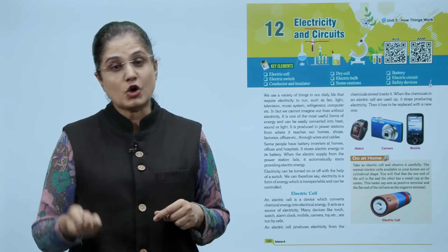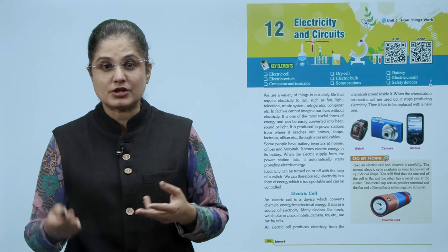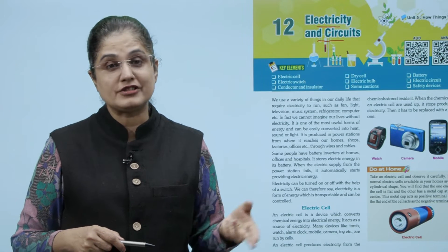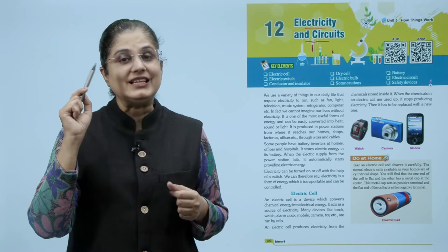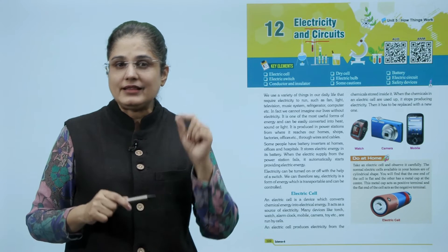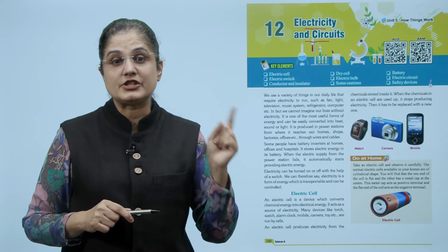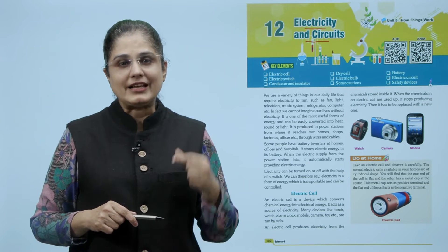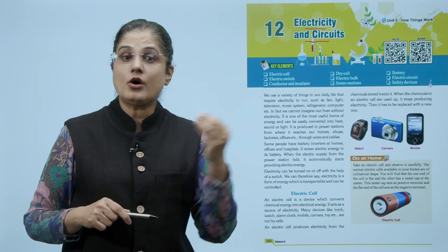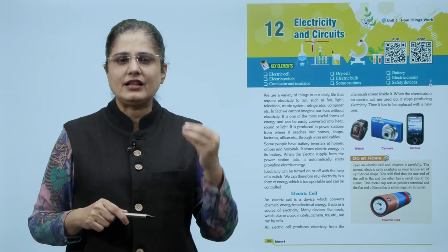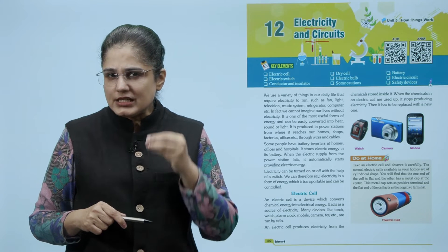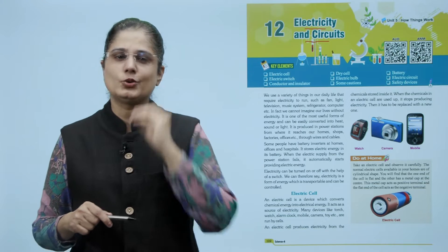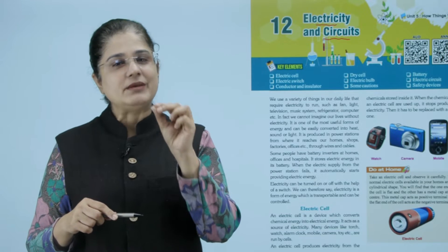It is produced in power stations from where it reaches our homes, shops, factories, offices through wires and cables. Some people have battery inverters at homes, offices and hospitals. It stores electric energy in its battery. When the electric supply from the power station fails, it automatically starts providing electric energy. So electricity can be turned on or off with the help of a switch. We can therefore say electricity is a form of energy which is transportable and can be controlled.